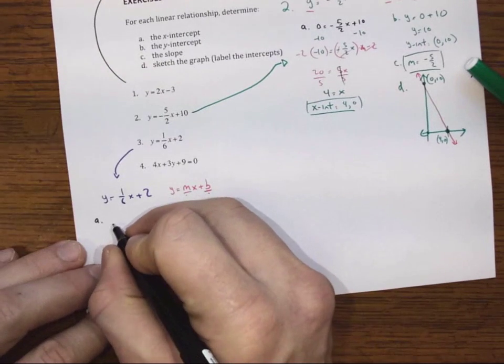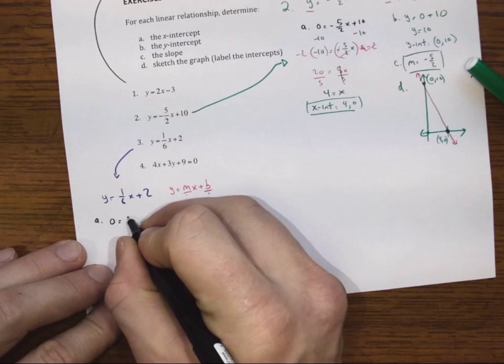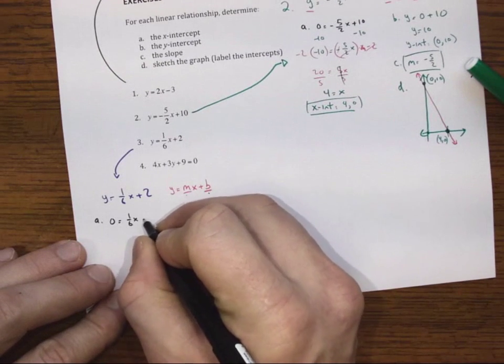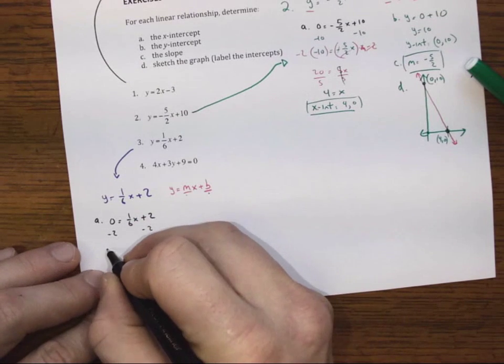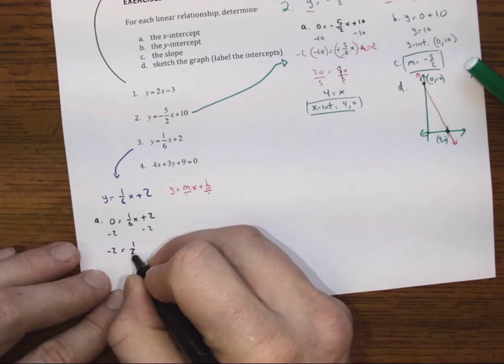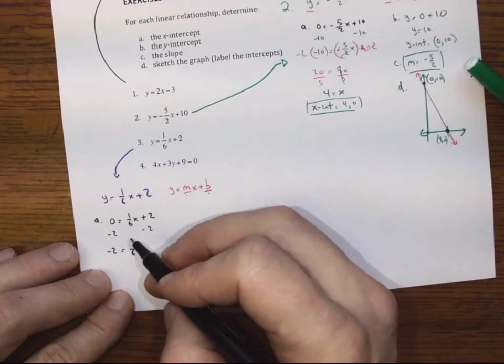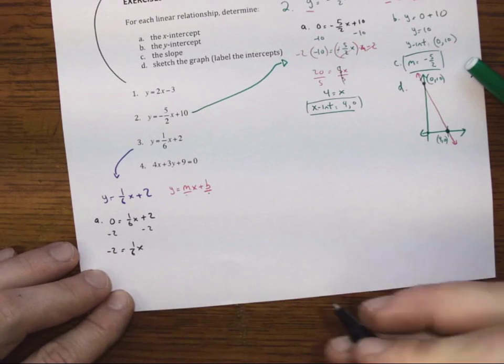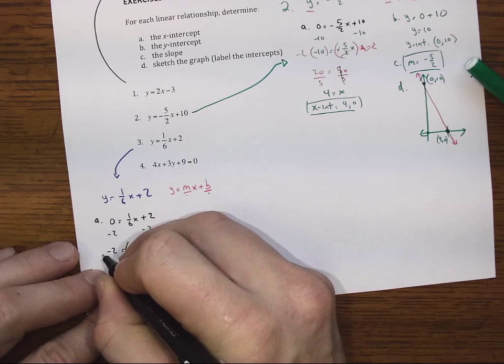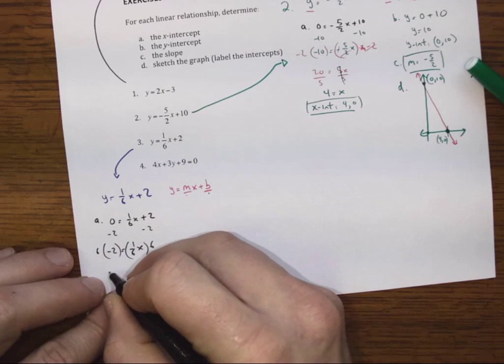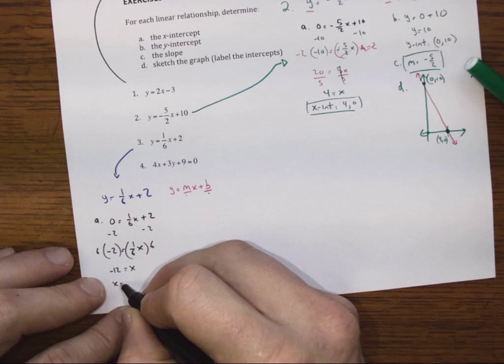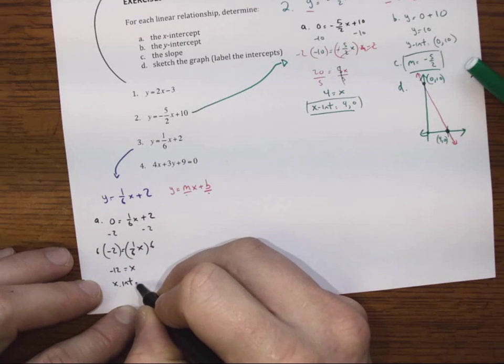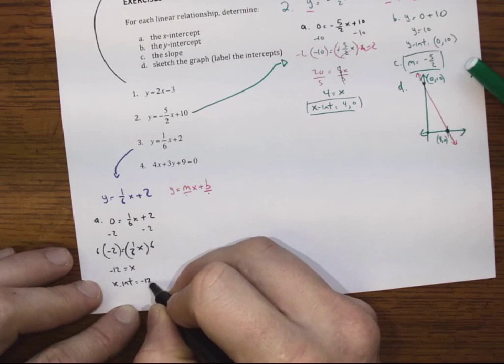So we're looking for the x-intercept first. So we'll put in 0 for y. 0 is a 6th of x plus 2. Take away 2 from both sides. And that gives us negative 2 is equal to a 6th of x. And that means to isolate x fully, I'll times both sides by 6. And I get negative 12 is equal to x. Therefore, my x-intercept is equal to negative 12, 0.